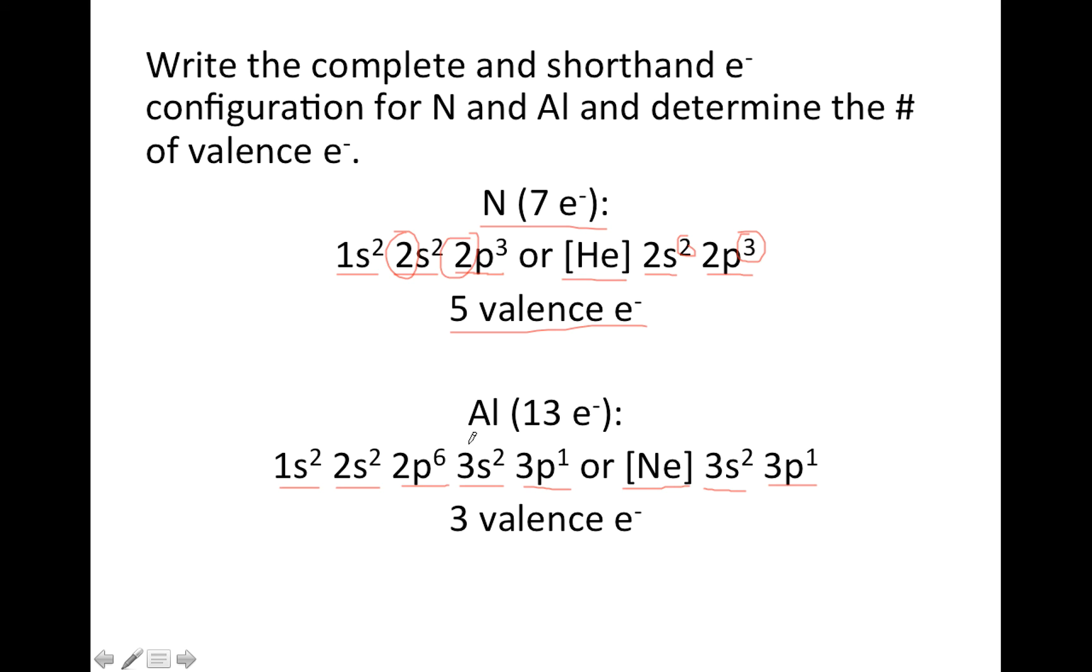And then valence, here's the principal quantum number for the highest numbered electrons, and there's a total of 3 valence electrons in the third shell, or the third principal quantum level. So, that's it for this video, good luck.